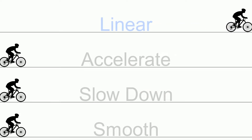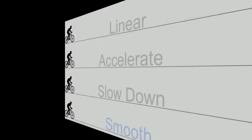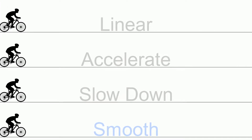It's not very natural, is it? If we were really watching a cyclist cycle from point A to point B, he would start off slow, build up speed through most of the journey, but then slow down to a stop at the end. This abrupt start and stop is the very reason why we need variable speed. And we have the perfect speed option for our cyclist — it's called Smooth.